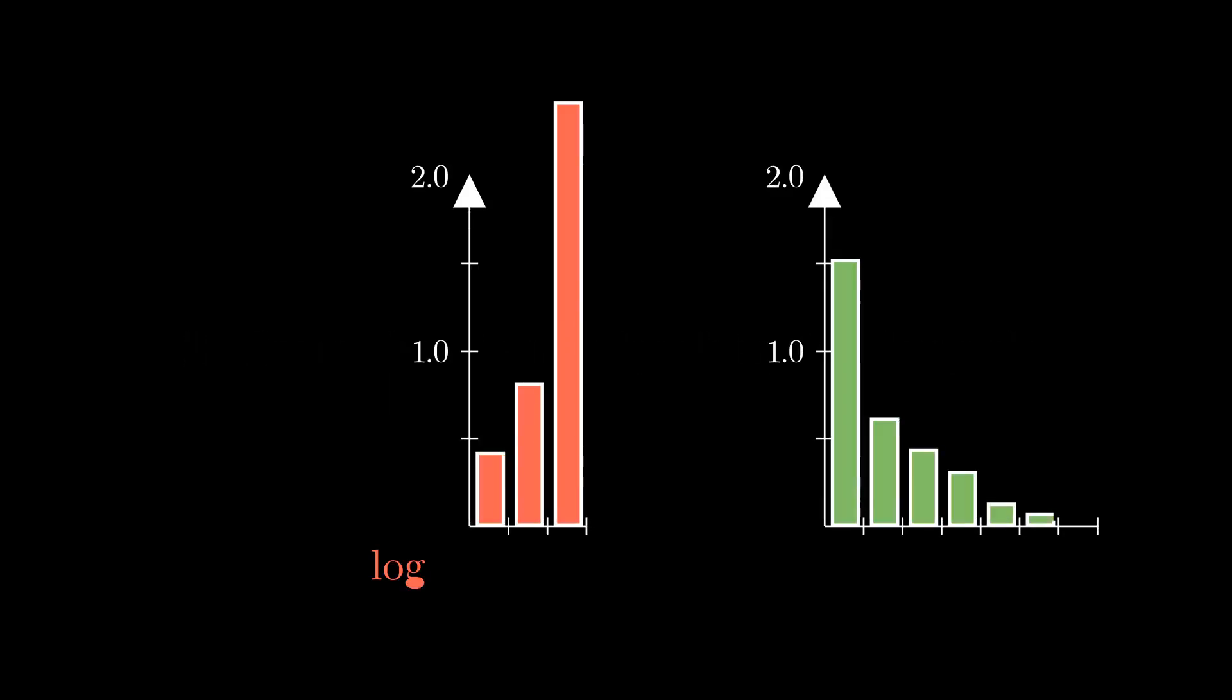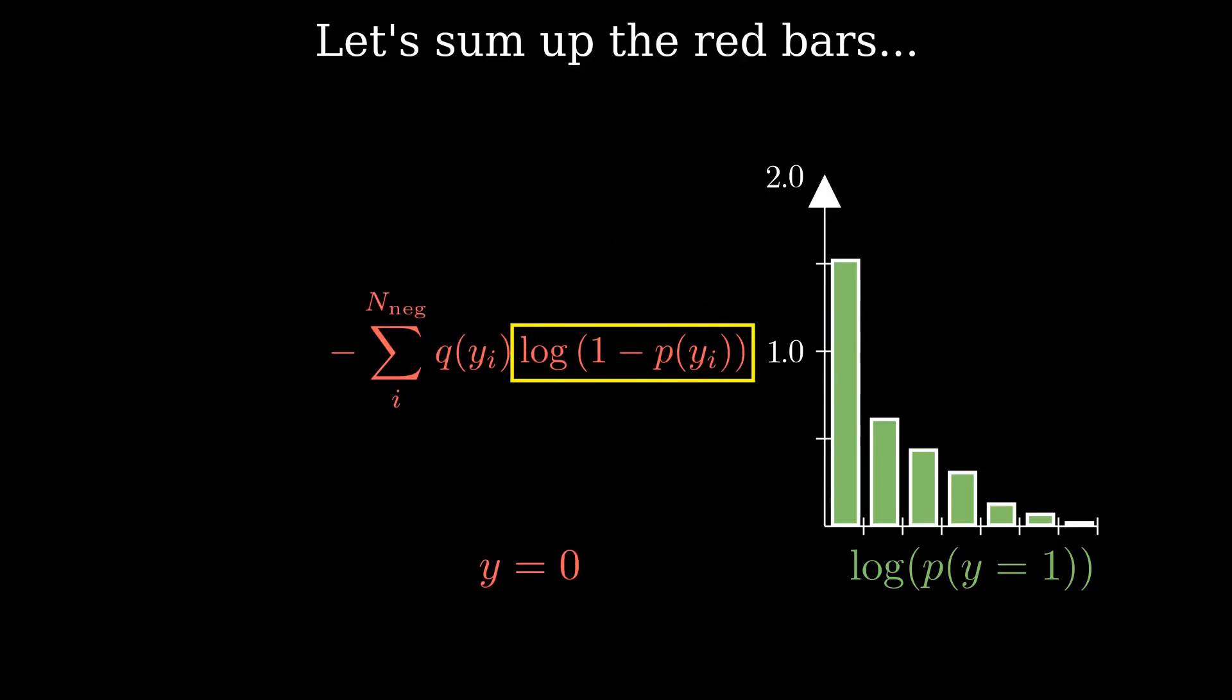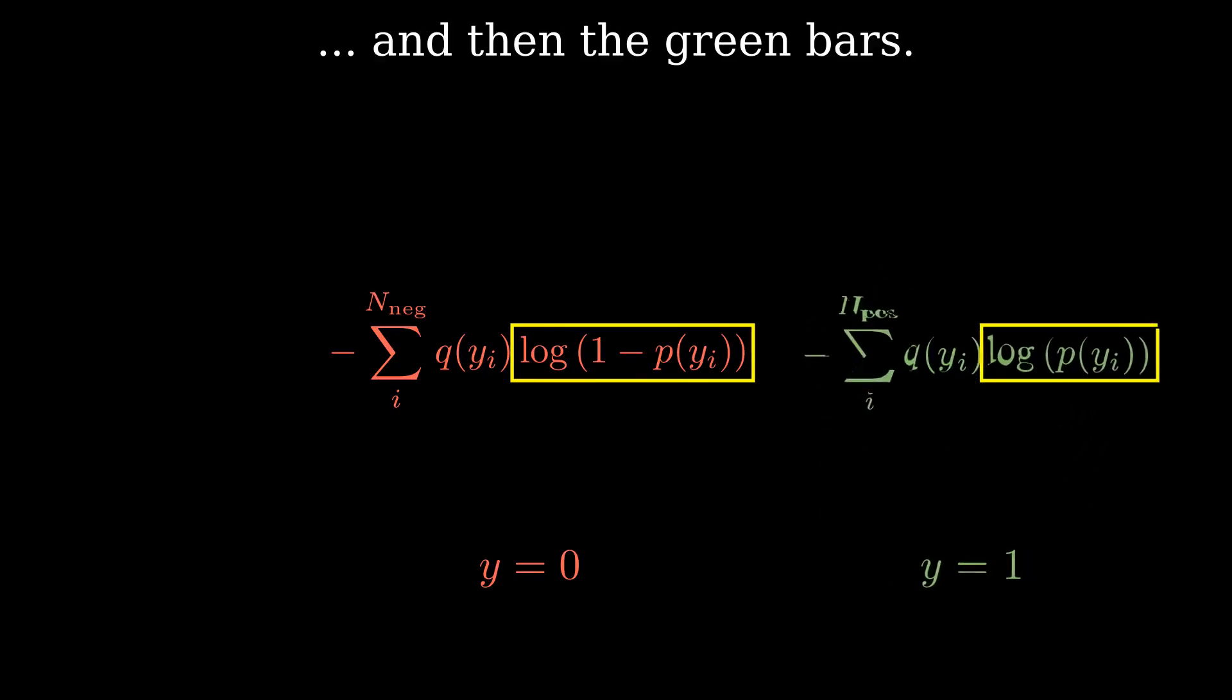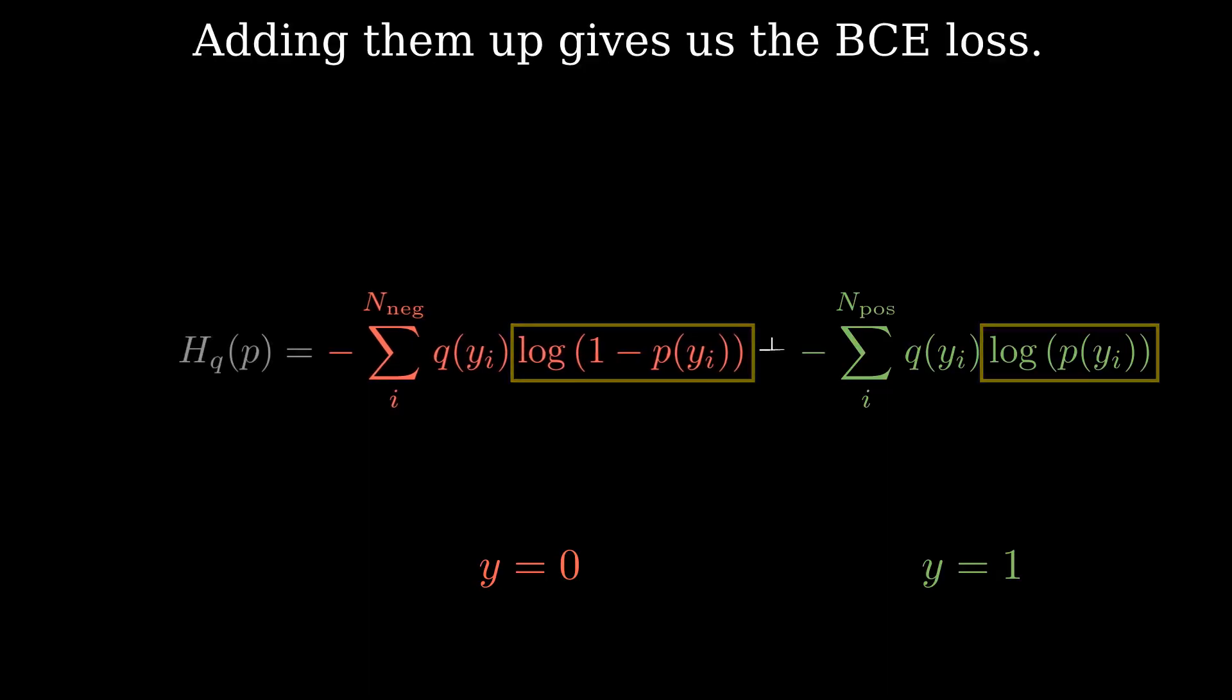These bars are the errors we computed for our data points. Let's sum up the red bars, the errors for the three red points in our dataset. And then, let's sum up the errors for the green bars, corresponding to the seven green points in our dataset. Adding both terms together gives us the BCE loss formula we've arrived at the end of part 1.